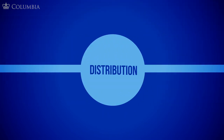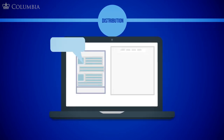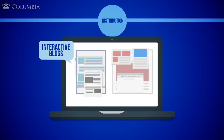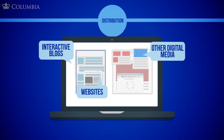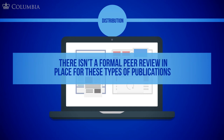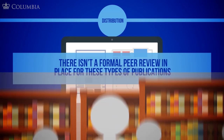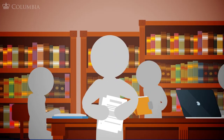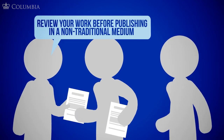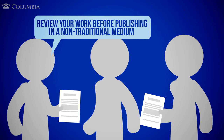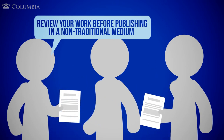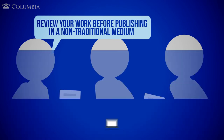The resulting books and journals are typically produced by publishing houses and presses. In the world of digital publishing, in addition to e-journals and ebooks, scholarship can come in the form of interactive blogs, websites, and other digital media. There isn't a formal peer review in place for these types of publications, so it's important to hold your own work to high standards and ask your peers and professors to review your work before publishing in a non-traditional medium.